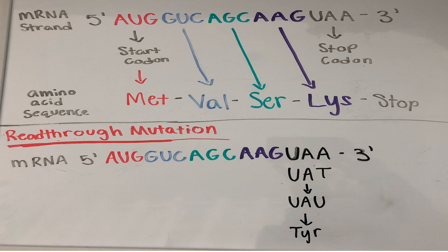Finally, a read-through mutation is when a stop codon is changed to a codon that codes for a different amino acid. This results in a longer, non-functional protein. Here, the stop codon UAA is mutated to UAU, and the amino acid is TYR instead of stop. The mRNA will keep being translated until there is another stop codon. This is a transversion mutation because the A was mutated to a T in DNA, and then mRNA was transcribed with the T becoming a U.